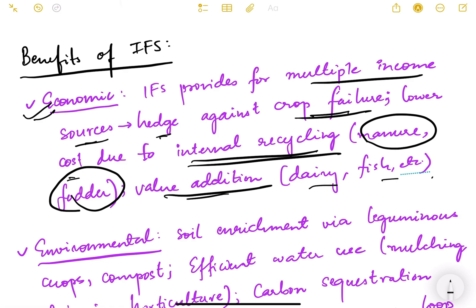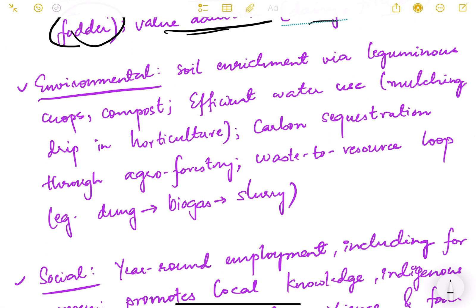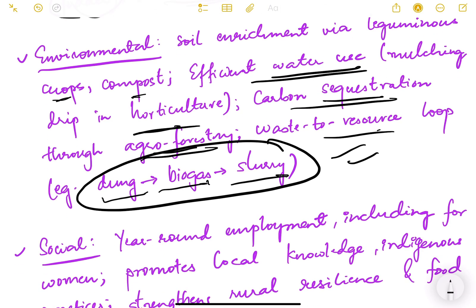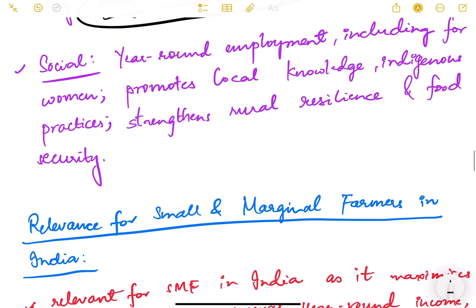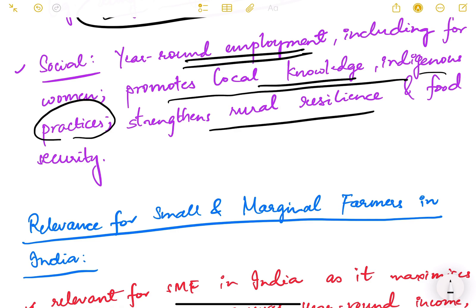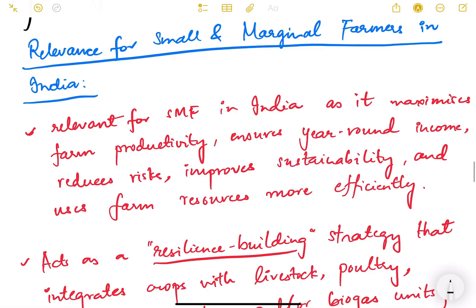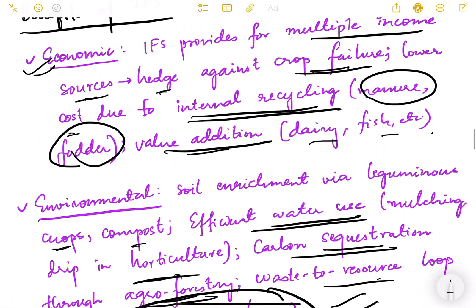Environmental benefits are also there - soil enrichment via leguminous crops and compost, efficient water use, promotion of organic farming, mulching, drip in horticulture, carbon sequestration through agroforestry, waste to resource loop like dung to biogas to slurry. There are social benefits - year-round employment including for women, promotes local knowledge and indigenous practices, strengthens rural resilience and food security.